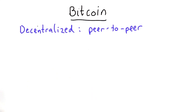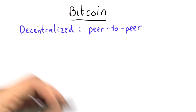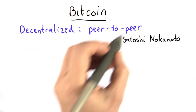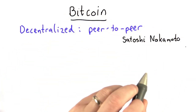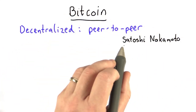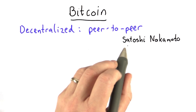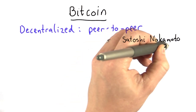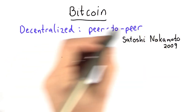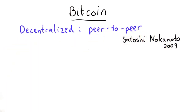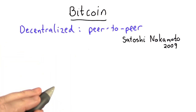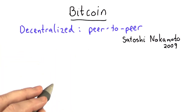Bitcoin combines lots of ideas from previous protocols, but the particular way that Bitcoin does it was proposed by Satoshi Nakamoto in 2009. The way it avoids needing a centralized bank is to keep track of every single transaction that ever happens.